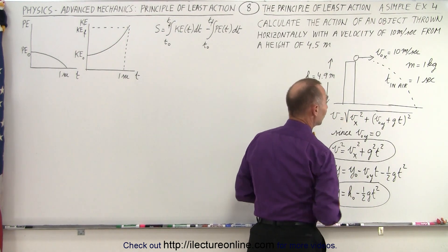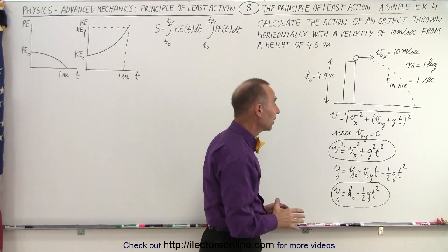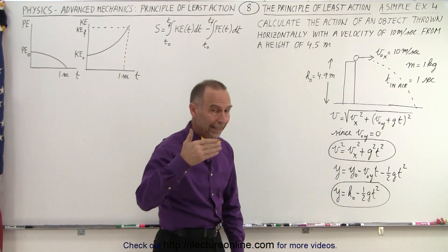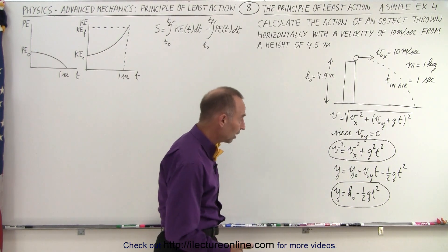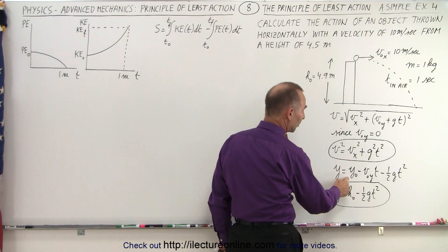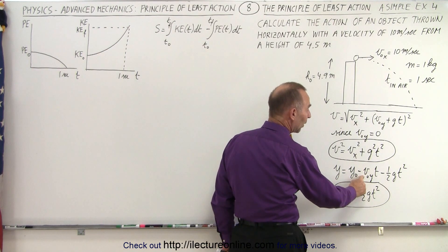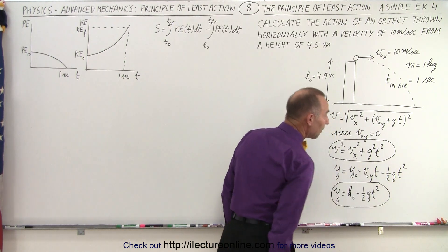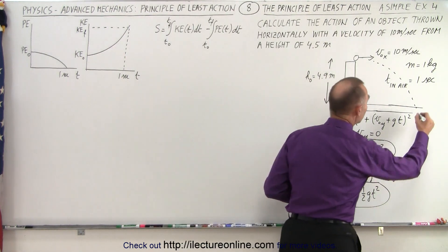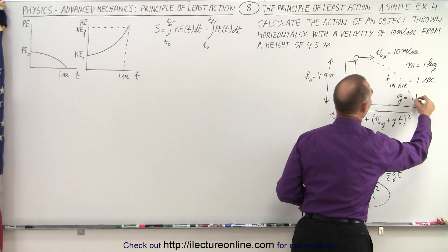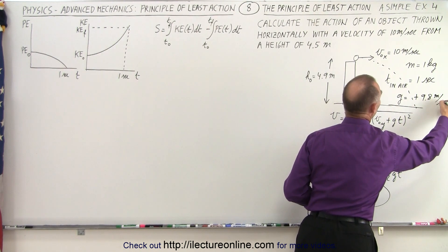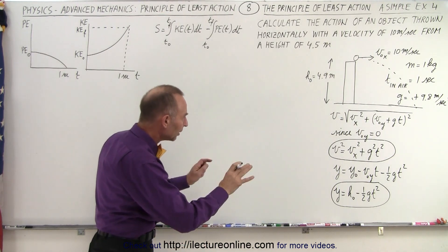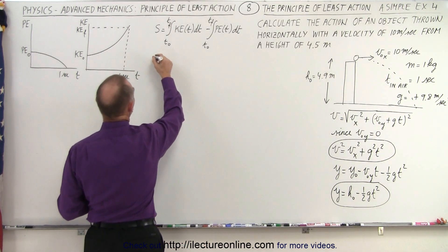We take the square root of that, and that gives us the velocity at any point in time. So v squared is simply equal to the x term plus the y term squared. In the vertical direction for the potential energy, y is equal to y sub 0, the original height, minus the velocity in the y direction initially times t — but that term will go to 0 — and of course we still have minus one-half g t squared. Remember that g equals positive 9.8 meters per second squared. Let's plug that into our potential and kinetic energy equations.